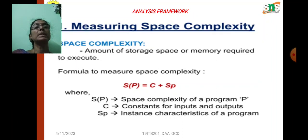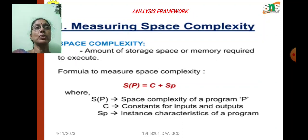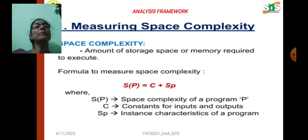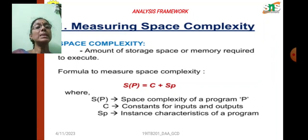In today's class we are seeing how to find and measure space and time complexity. Space complexity is the amount of space occupied during the corresponding execution of a program — how much memory the program occupies to execute. The formula for space complexity is: Space Complexity = C + SP, where C is the constant for inputs and outputs, and SP is the instance characteristics of the program.